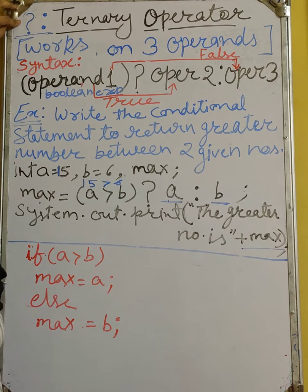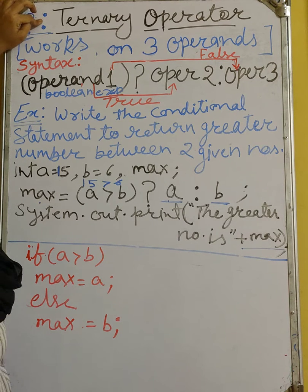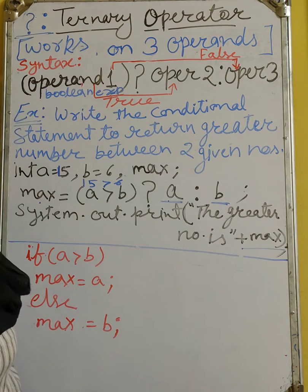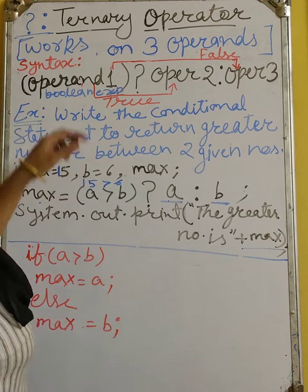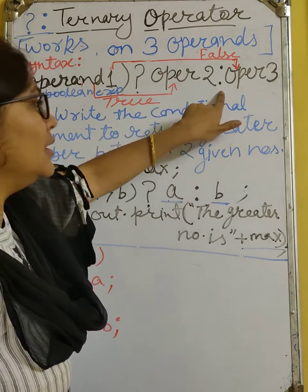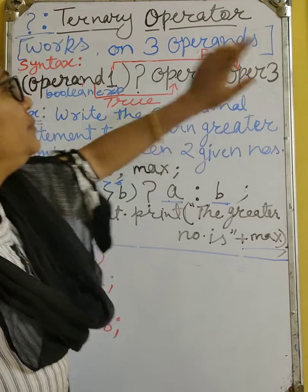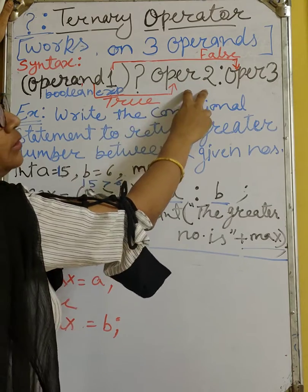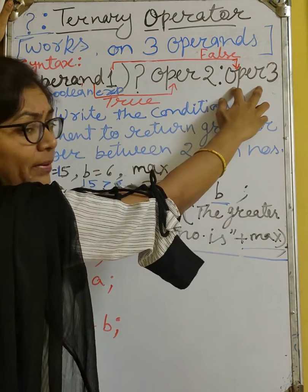Now what is the symbol of it? Question mark and colon sign. Question mark and colon sign are the symbol of ternary operator. Now what is the syntax of the ternary operator? Operand 1, question mark, operand 2, colon sign, operand 3.